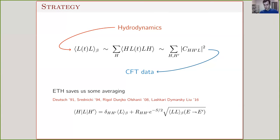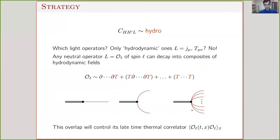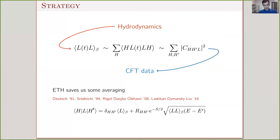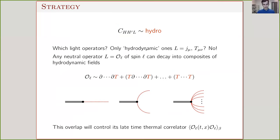The statement of ETH is that we don't even need to average — it's true at the level of individual energy eigenstates. There's an off-diagonal part which is random and very small — exponentially small — suppressed by the density of states. The variance of these random fluctuations is controlled by the two-point function of the light operator in the thermal state. This is where hydrodynamics enters: hydrodynamics will control this two-point function, thermodynamics controls the diagonal part. So off-diagonal heavy-heavy-light OPE coefficients will be controlled by hydrodynamics in a very direct way if we assume ETH.